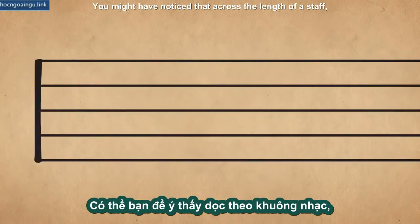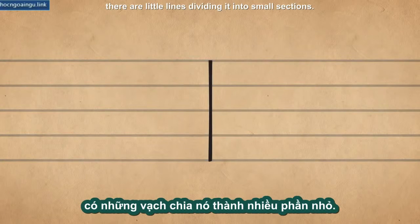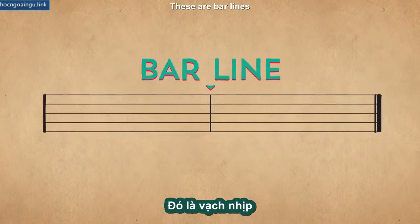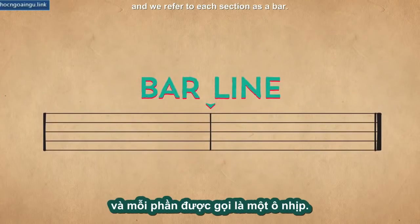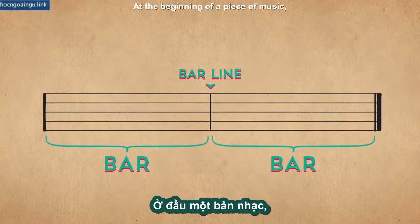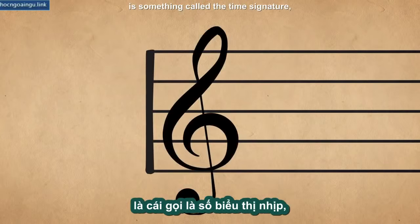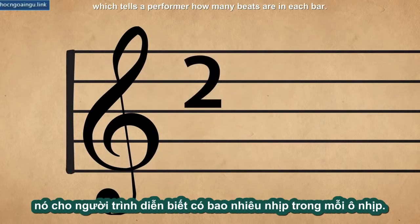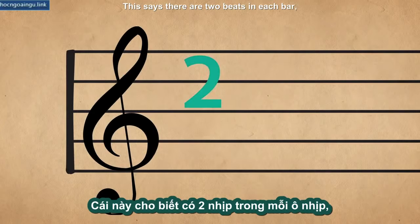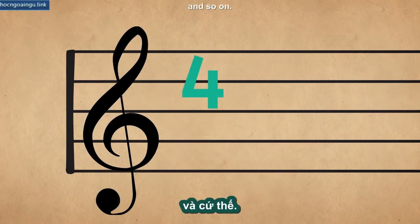You might have noticed that across the length of a staff, there are little lines dividing it into small sections. These are bar lines, and we refer to each section as a bar. At the beginning of a piece of music, just after the clef, is something called the time signature, which tells the performer how many beats are in each bar. This says there are two beats in each bar, this says there are three, this one four, and so on.